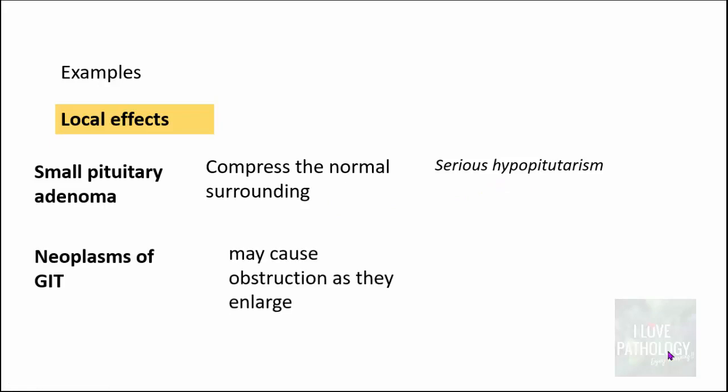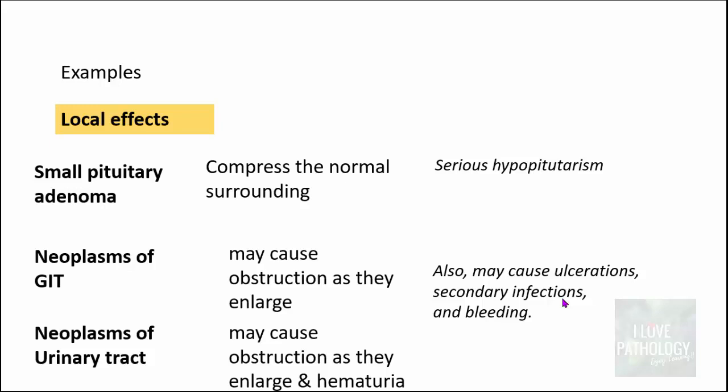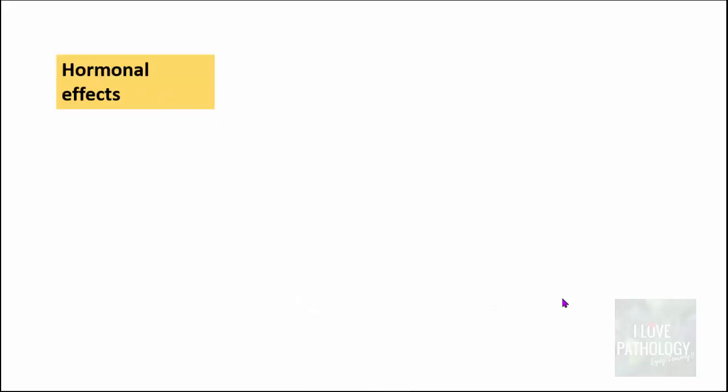Tumors of the gastrointestinal tract can cause obstruction as they enlarge, and also result in ulceration, secondary infections, and bleeding. Neoplasms of the urinary tract similarly can cause obstruction and result in hematuria — that is, passage of blood in urine. These tumors can also result in tissue death and provide an entry point for infection.